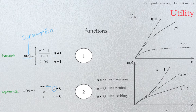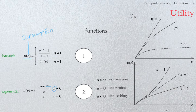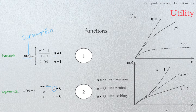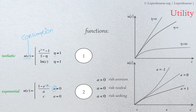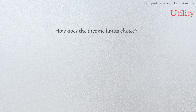For different values of parameter a we get different plots between consumption and utility. If a is greater than zero, the consumer is risk averse. If a equals zero, the consumer is risk neutral. If a is less than zero, the consumer is a risk taker. These are two basic important utility functions. There are other utility functions which can be used in different situations, and there is a whole area of research trying to develop better utility functions depending on the economic question being studied.